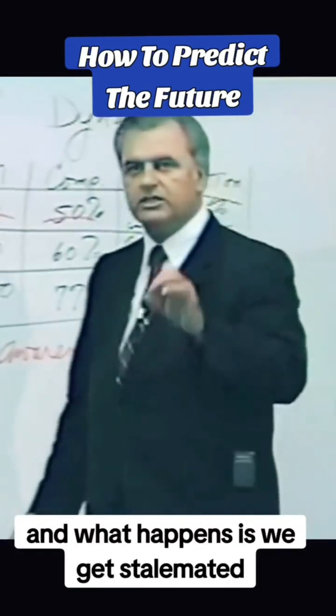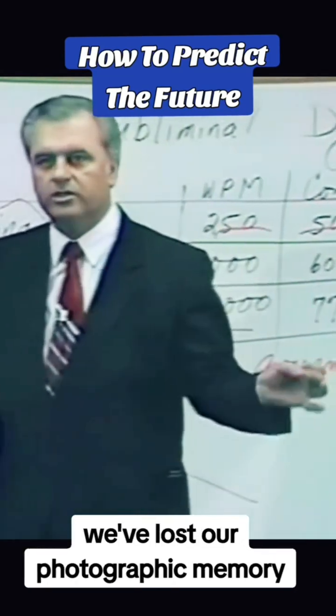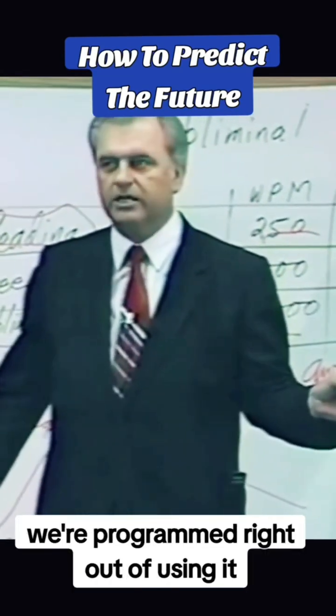We get stalemated by the time we're about six or seven years old. We've lost our photographic memory - we're programmed right out of using it.